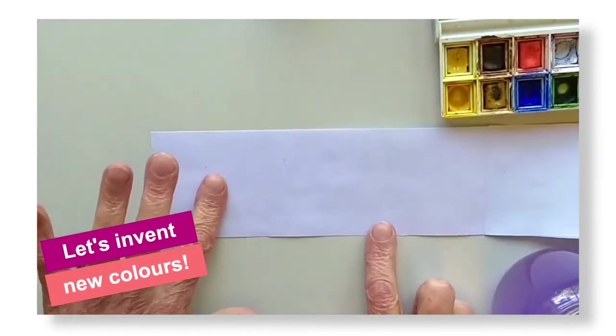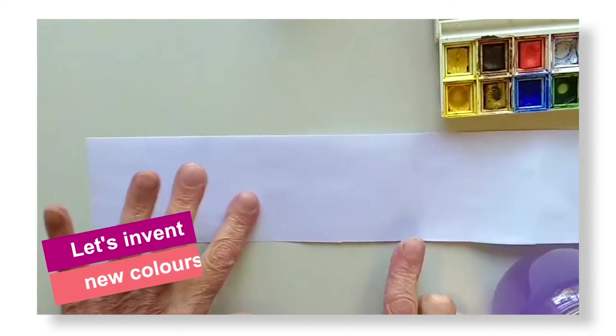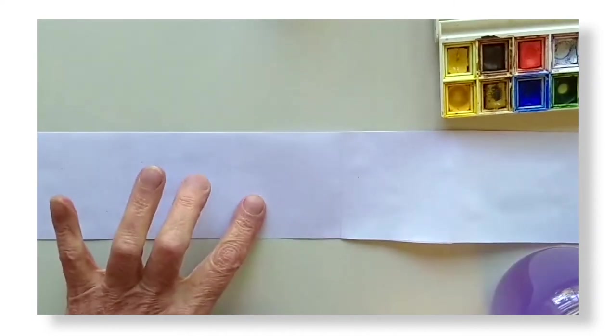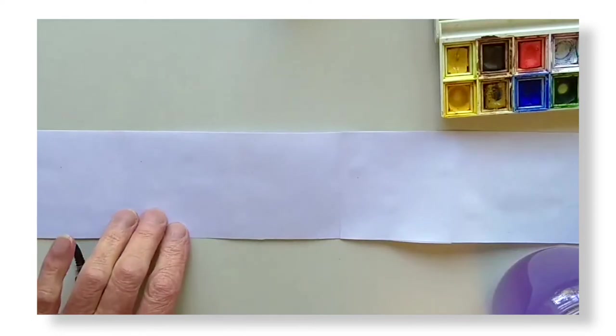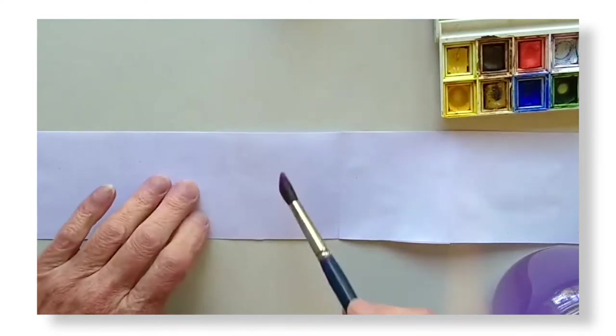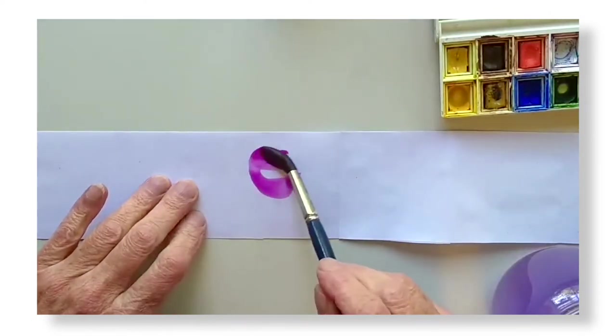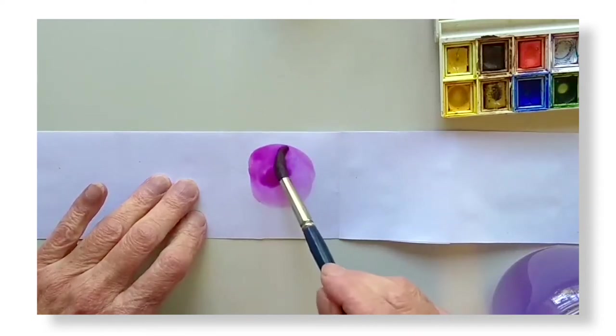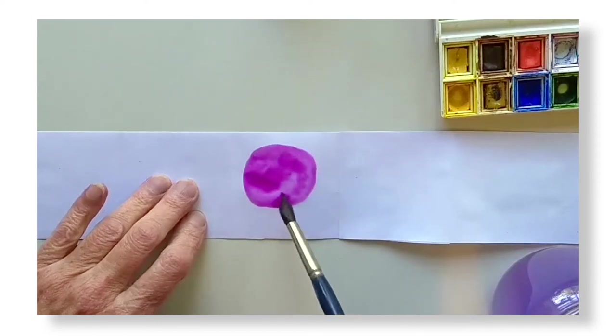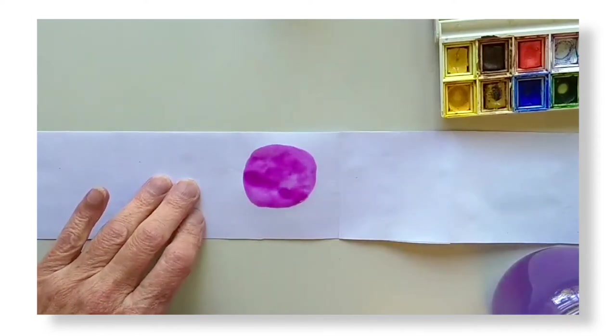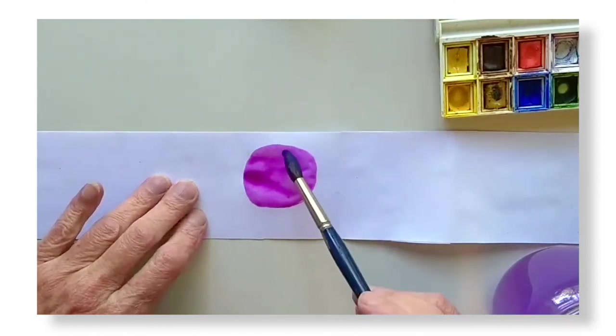Now we're at the fun part. Inventing our own colors. I'm going to leave the first two pages blank so I can add a title and dedication later. On the third page, I'm going to mix my first color. I remember from my experiments that blue and purple with a little bit of white look really cool together. So I'll try to do that again.